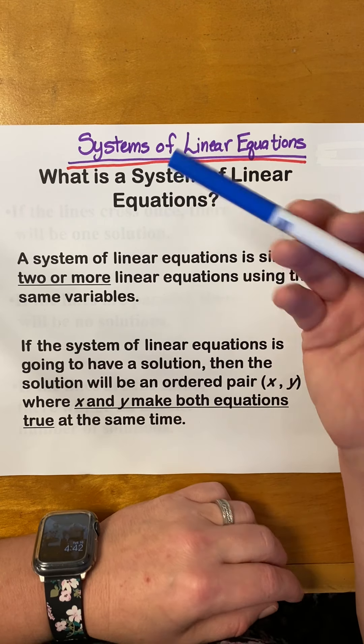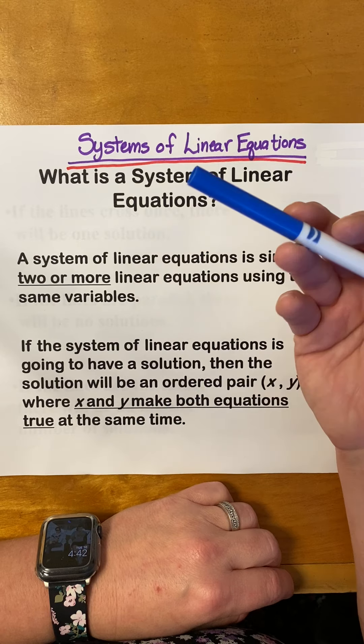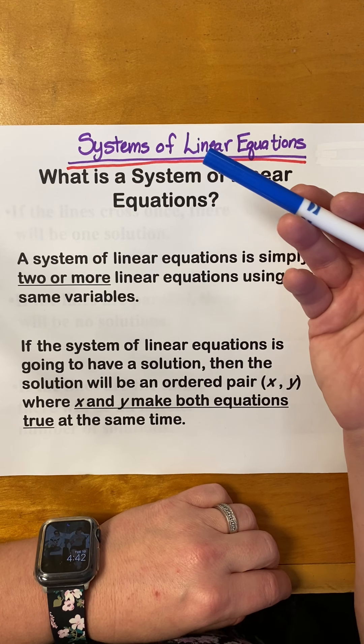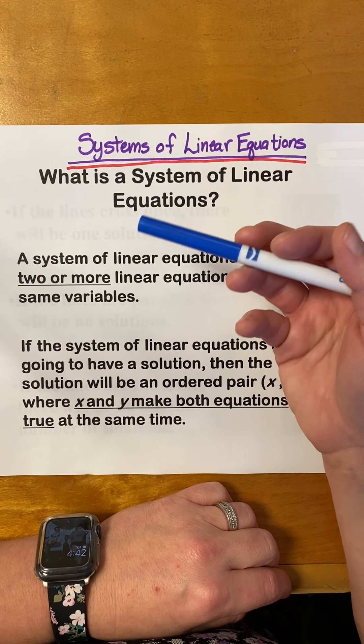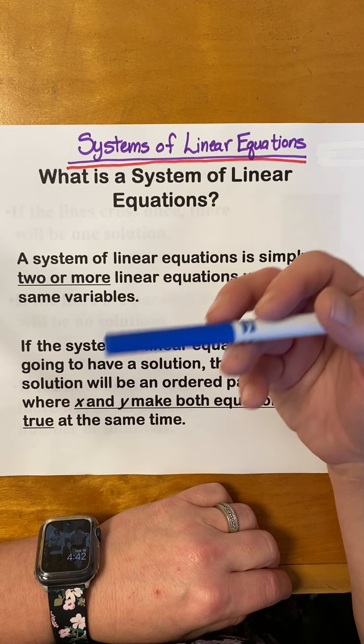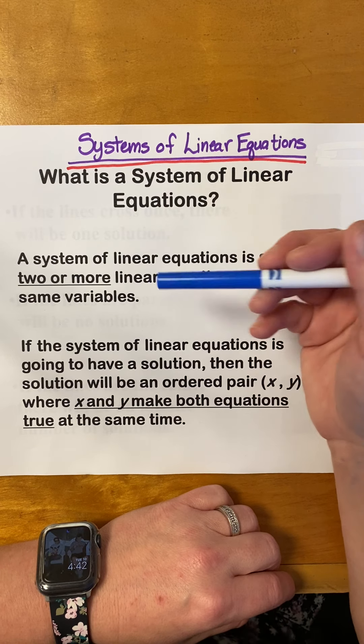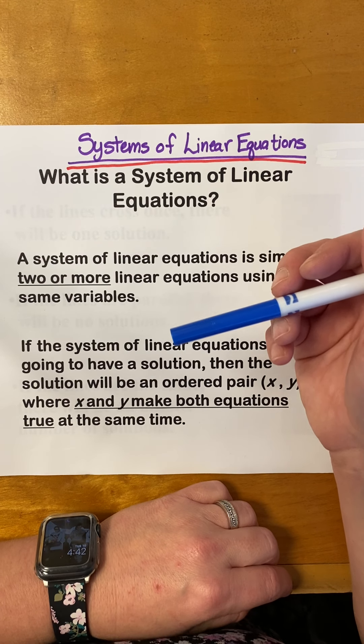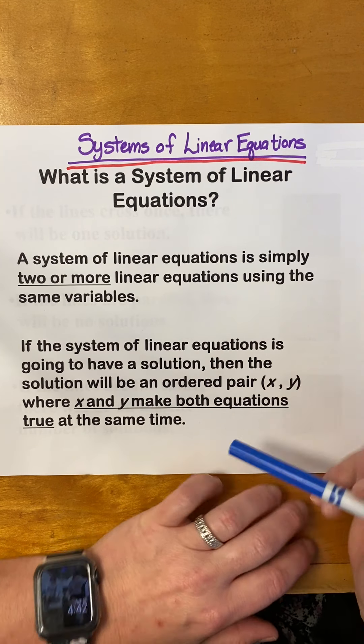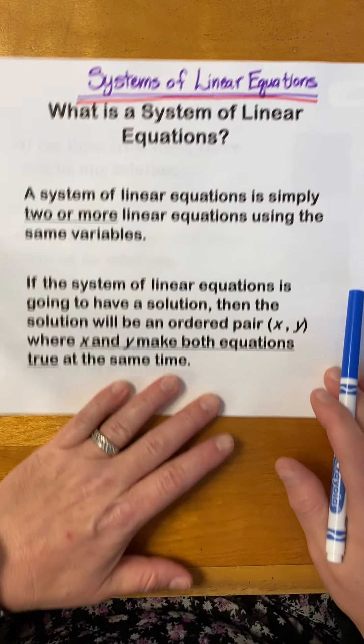So if we have two variables, we would need two equations to be able to solve the system. If we had three variables like x, y, z, we would need three equations to solve the linear system, just for example.